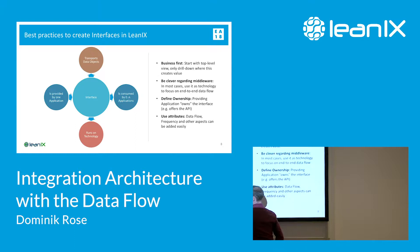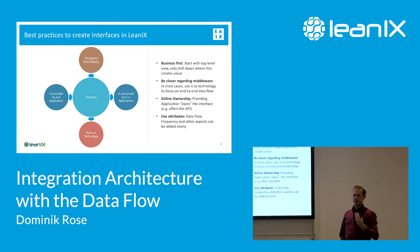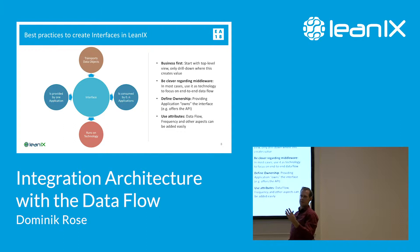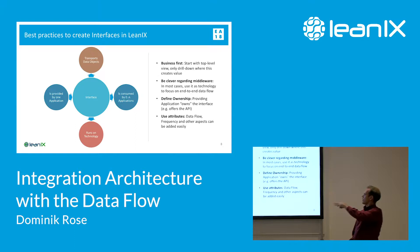It's the IT component fact sheet — it runs on technology and links directly to an IT component fact sheet. We have certain attributes on the interface in our standard. One is particularly important: we can define a data flow direction. Providing and consuming is not the direction of data — data can flow from here to here, or be bidirectional. This is a property of the interface separate from providing and consuming, which is about ownership.